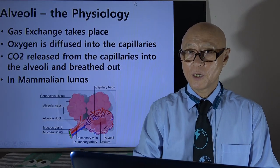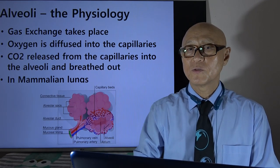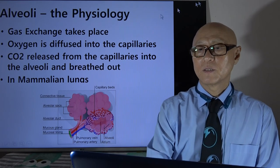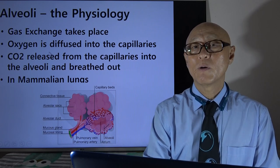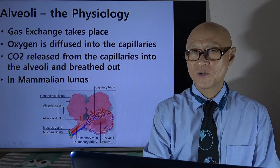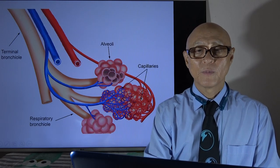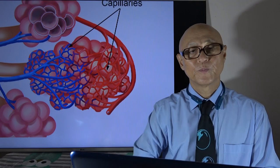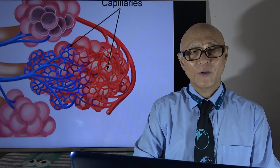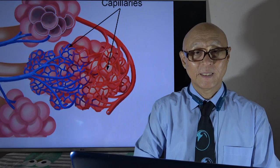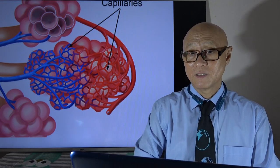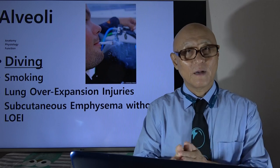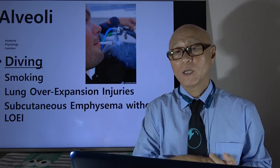Alveoli are where gas exchange takes place. Oxygen diffuses into the capillaries and into our body, and carbon dioxide is released. This is very typical of mammalian lungs — other species have different shapes and functions. Whoever made the human body must be an amazing existence. Smoking is very hazardous, and it is related to lung overexpansion injury as well.